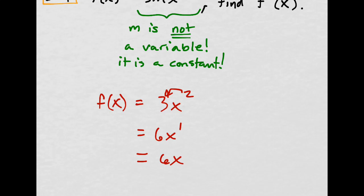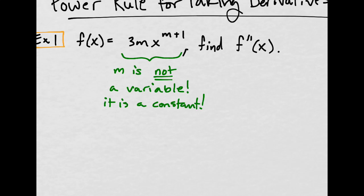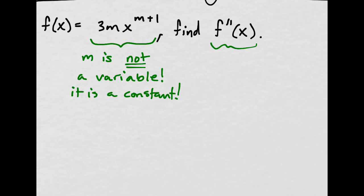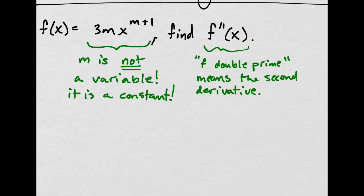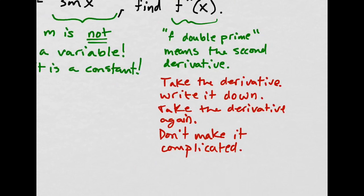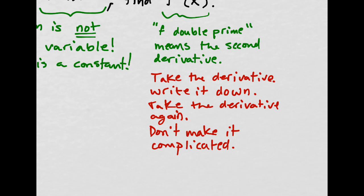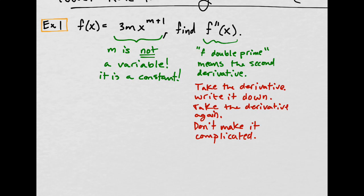Let's look at this example. So that's what I mean. It's not a variable, it is a constant. Also, the way you say this, f double prime, means the second derivative. All that means is take the derivative once, see what you get, take the derivative again. That's all. Take the derivative, write it down, take the derivative again, that's it.